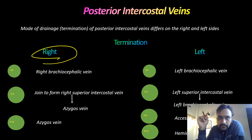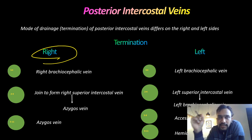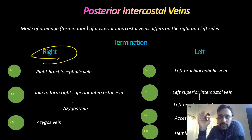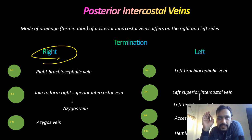On the left side, this superior intercostal vein drains into the left brachiocephalic vein. On the right side, the superior intercostal vein drains into the azygous vein. The rest of the veins on the right side — from the 5th to the 11th posterior intercostal veins — are also draining into the azygous vein.